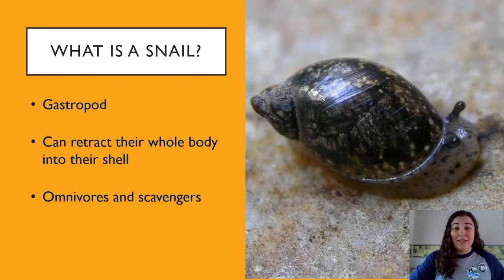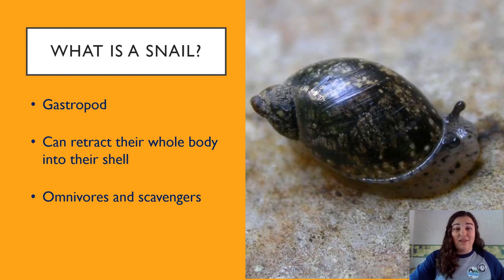Now I'm going to start by talking a little bit about snails. Unlike most of the macroinvertebrates that we look at when we do a stream assessment, snails are actually gastropods, not insects. They also can pull their whole body into their shell as a form of protection — you may have seen them do that if you've picked a snail up outside. Snails are also omnivores and scavengers, which means that as they go along the bottom of the stream, they eat things like plant debris, animal carcasses, and algae.